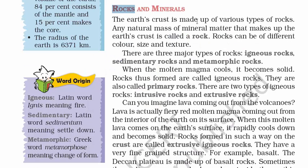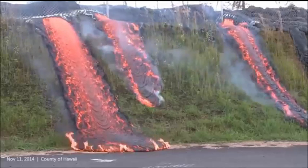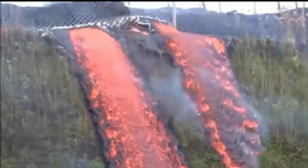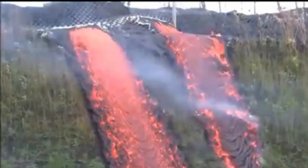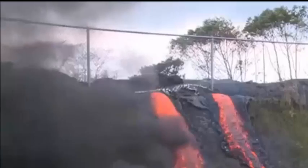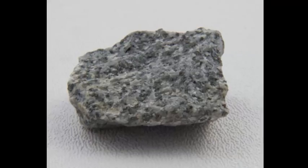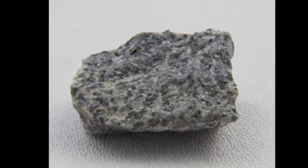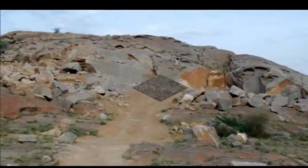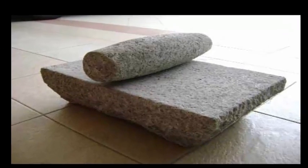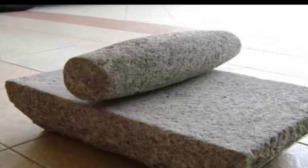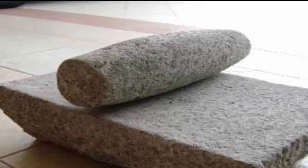Now let's read about rocks. The earth's crust is made up of various types of rock. Rocks can be of different color, size, and texture. The major types are igneous rocks, sedimentary rocks, and metamorphic rocks. Imagine lava coming out from a volcano — it is fiery red molten magma coming out from the interior of the earth. When this molten material cools down rapidly on the earth's surface and becomes solid, the rock formed in such a way is called igneous rock. In literal terms, a common example is granite, or the grinding stone we use to make paste of masalas and other homemade food items.